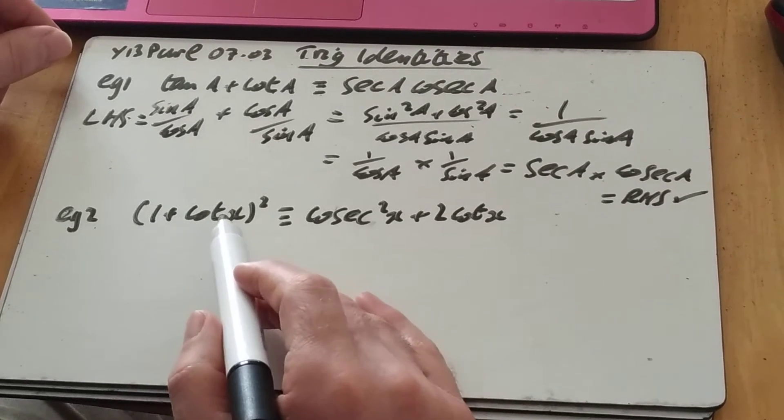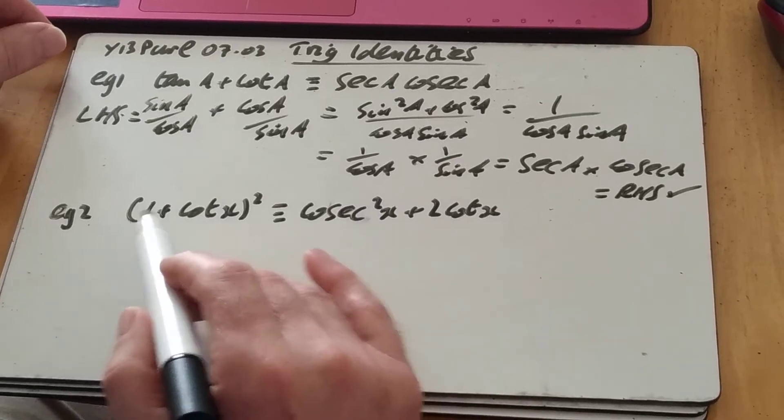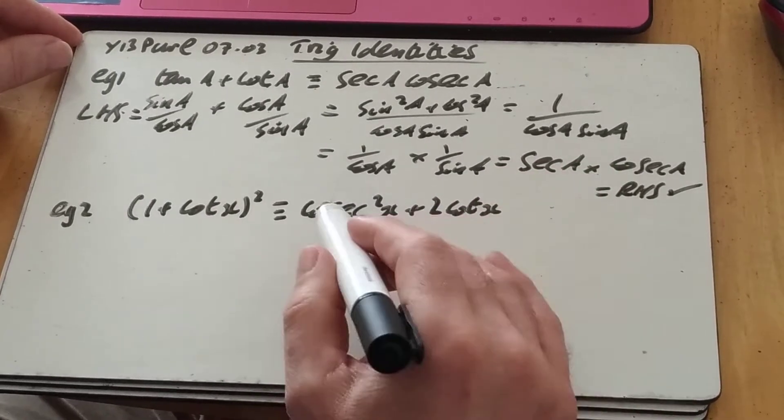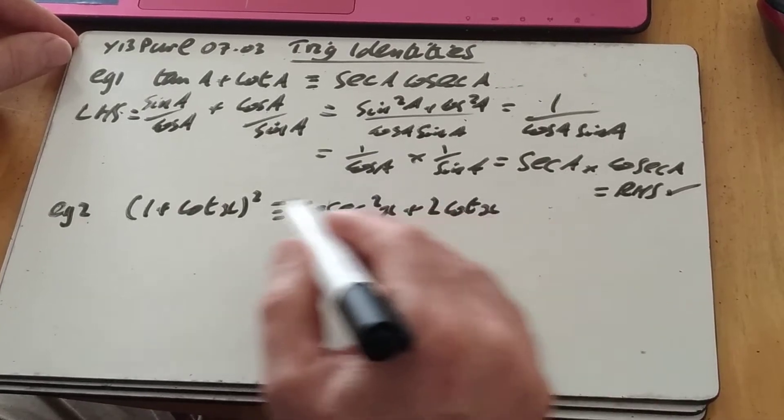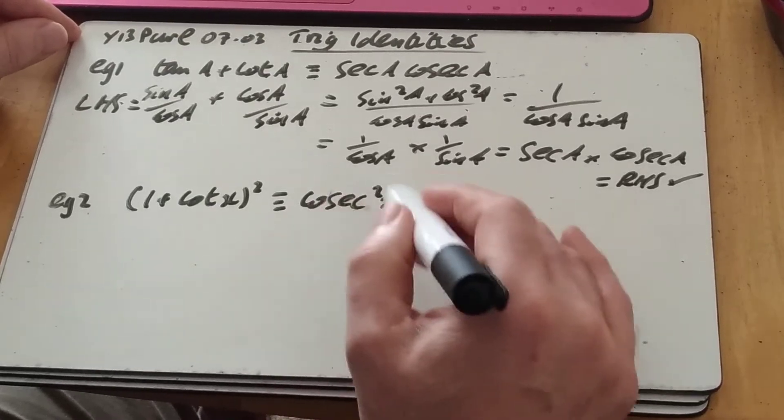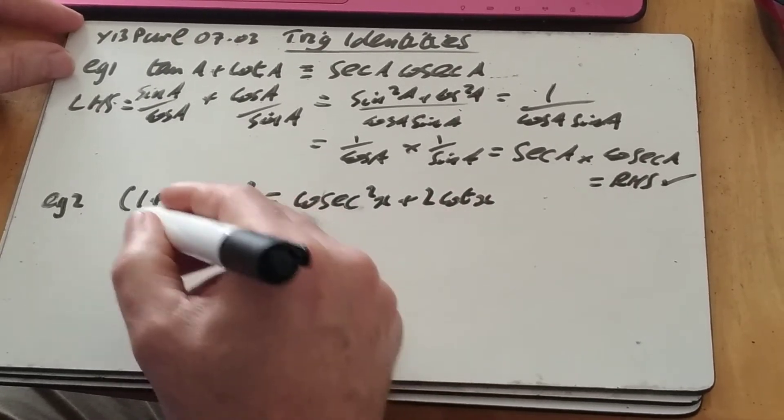Example 2, 1 plus cot x all squared is equivalent to, we've got two terms here, so I'm probably going to be expanding. And looking ahead, I can already see that if that's my last line, I've got the 2 cot from there. And I'm probably going to be using a Pythagorean identity to rewrite it in terms of cosec x squared. So let's see what we get there.